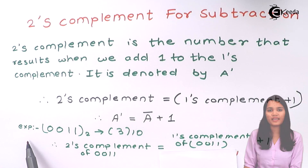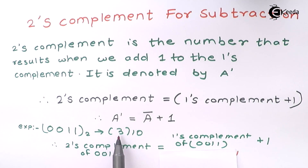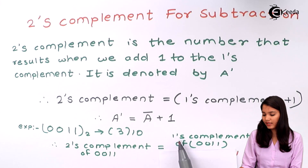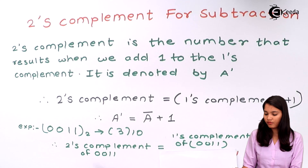Let's see an example. We have taken the binary number 0011, which is 3 in decimal, and we have to find out the 2's complement of 0011. According to the formula, first we find out the 1's complement of 0011 and then add 1 to it. This is the standard formula for finding the 2's complement of a number.